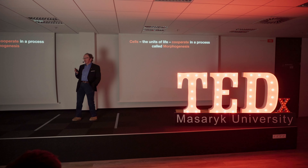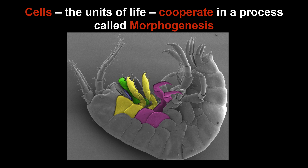Especially us animals, we are very good at morphogenesis. I would like to demonstrate that here on a crustacean, on a shrimp. This animal has on every segment of its body a specialized appendage. Each appendage has a specific function — some are used for breathing, some for swimming, some for eating — and the function associates with a different form, a different shape. So how does this arise?